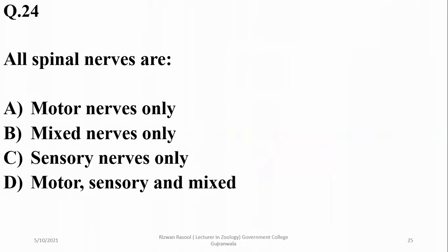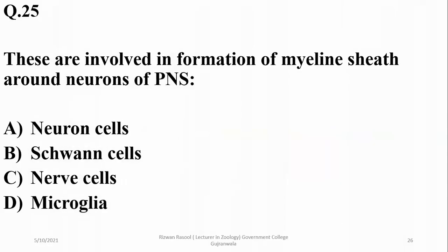All spinal nerves are mixed nerves — there are 31 pairs, all having both sensory and motor neurons. Schwann cells are involved in the formation of myelin sheath around neurons of the peripheral nervous system, while oligodendrocytes and microglia are responsible for myelin sheath formation in the central nervous system.